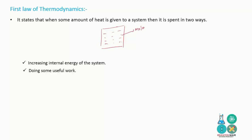Consider this figure — this is the system, and these are the molecules of a gas. According to the law, when some amount of heat dQ is given to the system, it is spent in two ways: first, increasing the internal energy dU of the system.